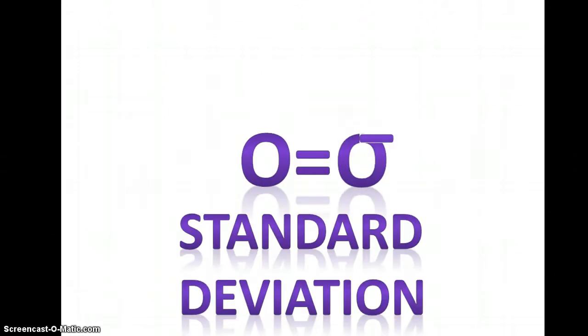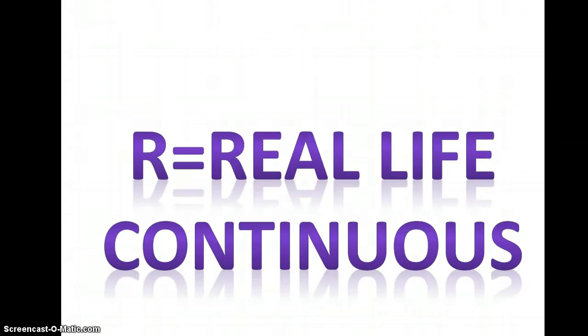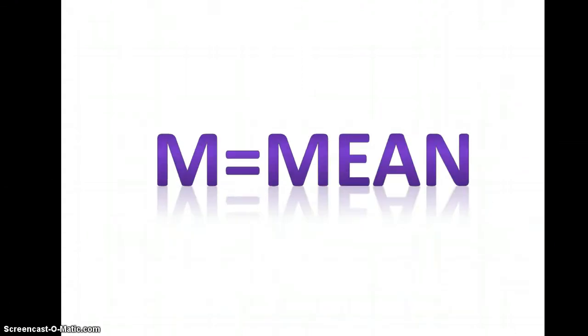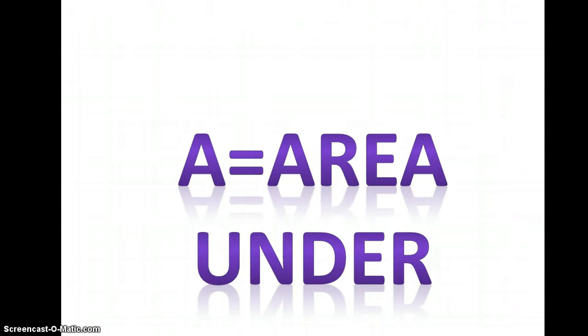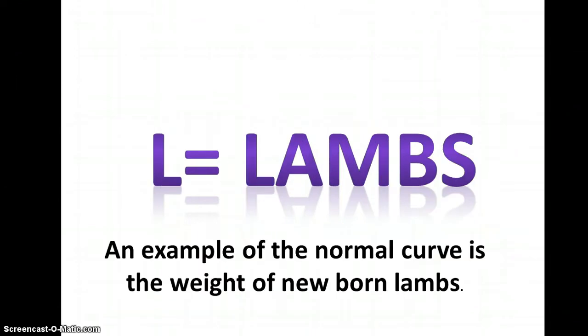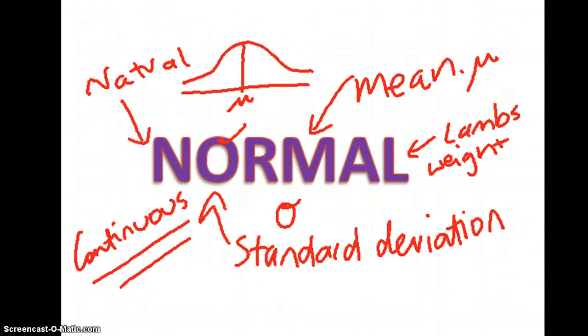Normal, N for natural, the O for the standard deviation sign, the R for the real life continuous, M for the mean, A for the area under the graph, and L for the lambs. Lambs meaning it's a great example of the normal curve as the weight of newborn lambs. How do we remember normal? We need that picture in our minds. Normal, mean, standard deviation, continuous, that kind of thing.